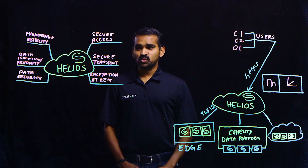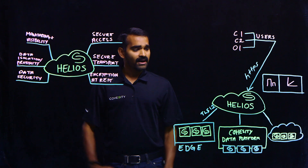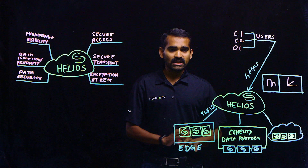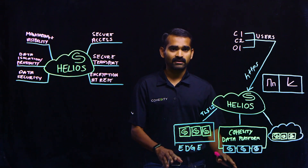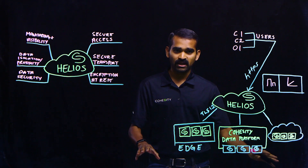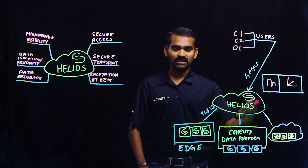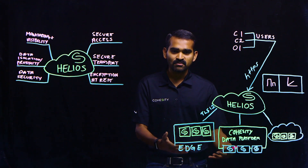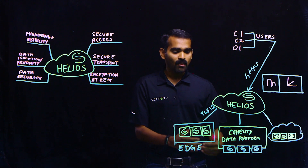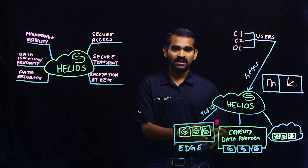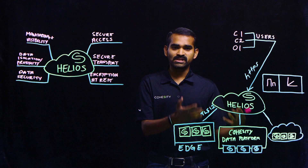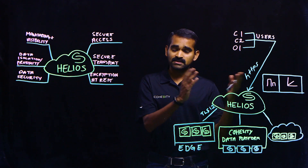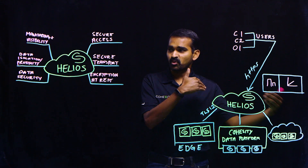Moving on to the next one, which is data security. The data that we bring into the environment is metadata — we never bring actual customer data from the Cohesity data platform into the Helios environment. The type of metadata we bring in includes stats information about the clusters, the object types we replicate, and the time taken to complete a job. And as I said earlier, it also gets encrypted at rest.